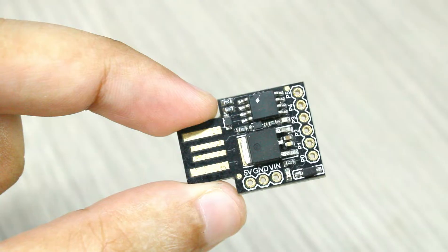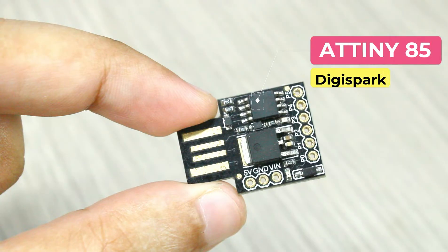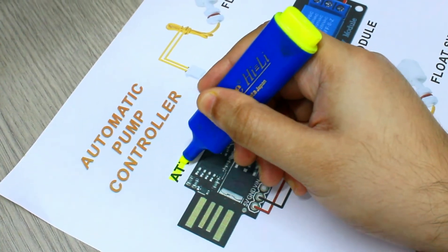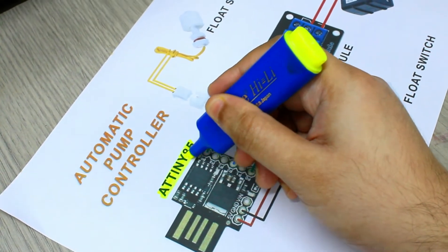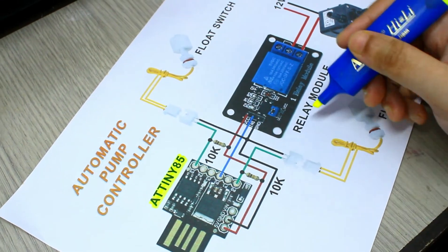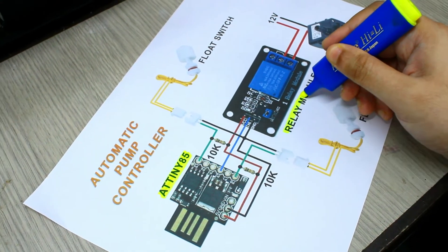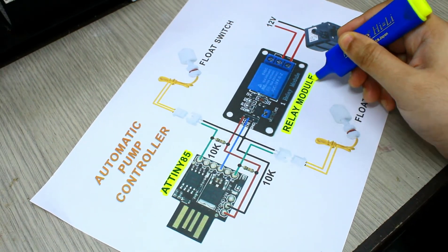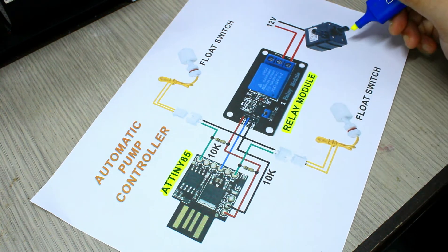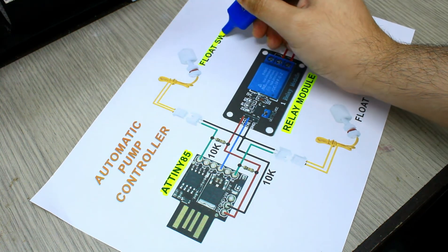For the digital circuit you need a Digispark ATtiny85 board or any Arduino board. You would also require a 5 volt relay module, two float switches, and two 10k resistors.